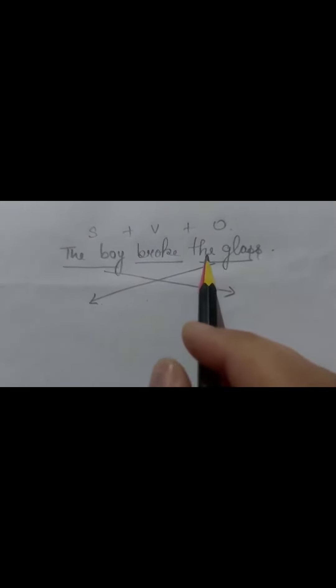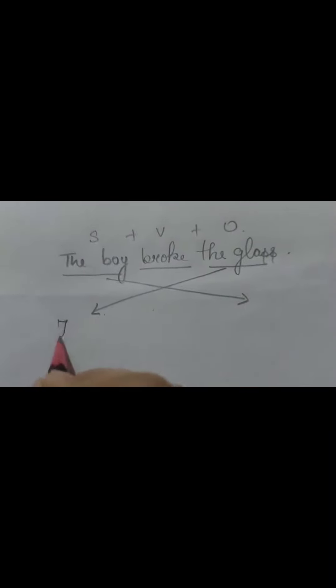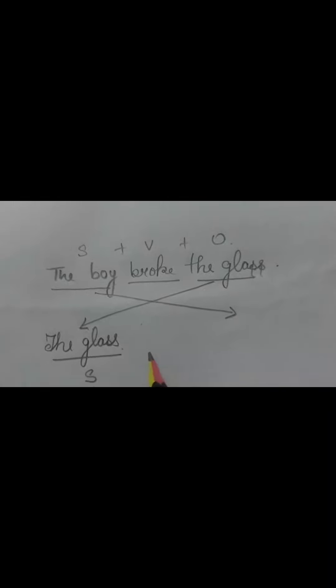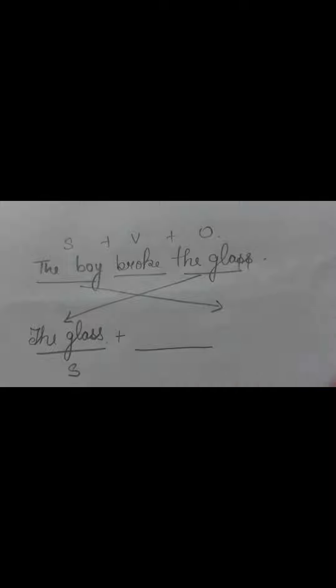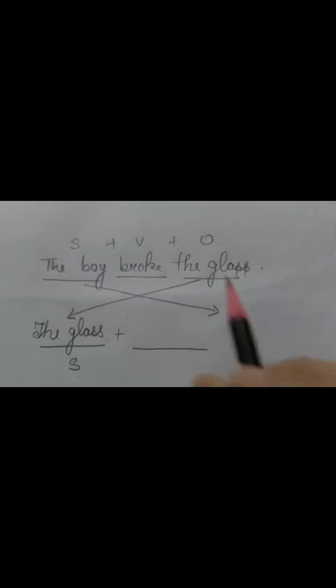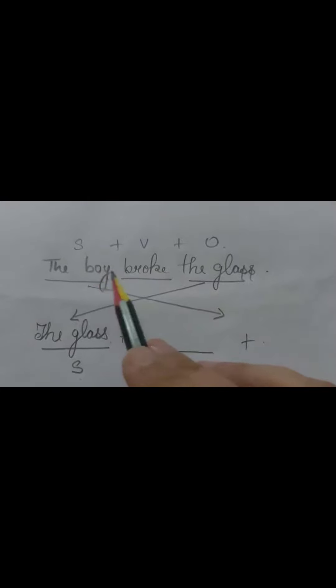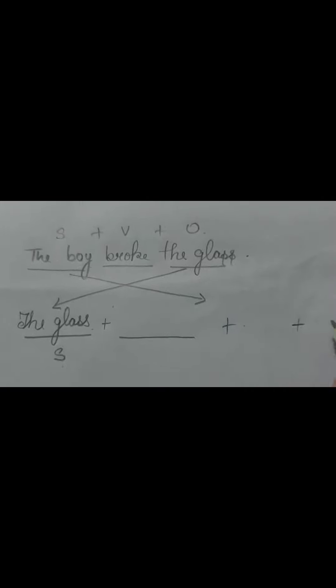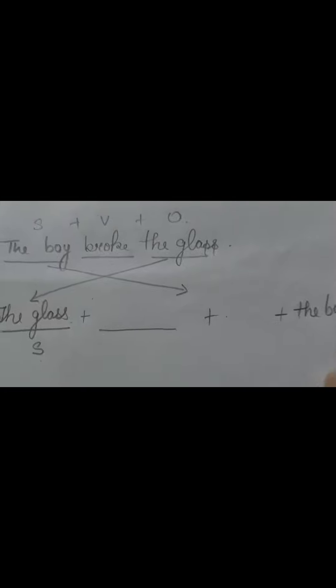In the passive voice sentence, your subject will be 'the glass.' Now it becomes your subject for the passive voice. We are leaving the place of verb for now — we don't know about the verb yet. The object will be 'the boy.' I am giving a space for one more word here, which I will tell you later.